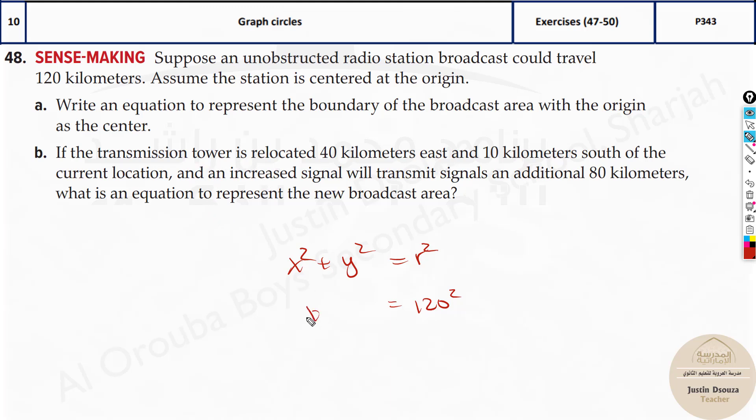If the transmission tower over here, it'll be the same. Now, if the transmission tower is relocated 40 kilometers east. Here, because they have mentioned the directions, we have to know which is north, south, east, and west. Above is always north, down is south, right is east, and left is west. So they have told 40 kilometers east. So it's going over here 40 and 10 kilometers south over here 10.